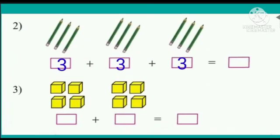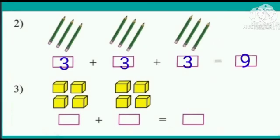Here there are three groups of pencils and each group has three pencils. So three plus three plus three is equal to nine. We are adding three three times.